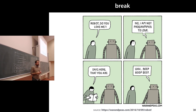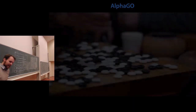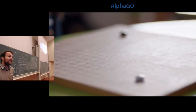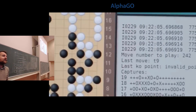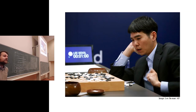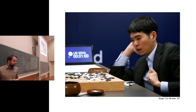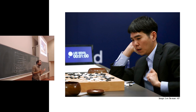Let's take the second half of the lecture, looking at AlphaGo. In the interest of time, we'll skip the documentary trailer. This is Lee Sedol, who lost three out of five matches against AlphaGo. I'll give you an impression of how AlphaGo roughly works.